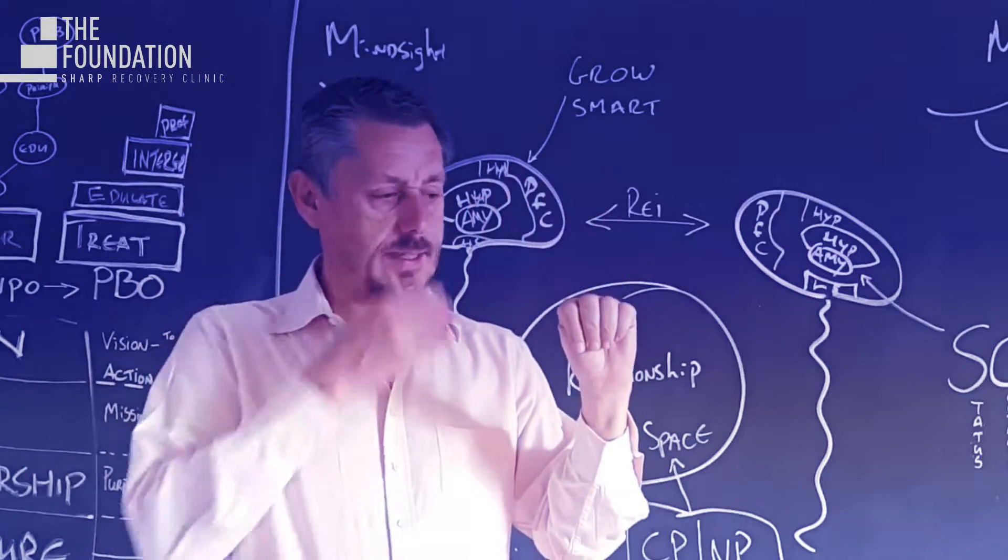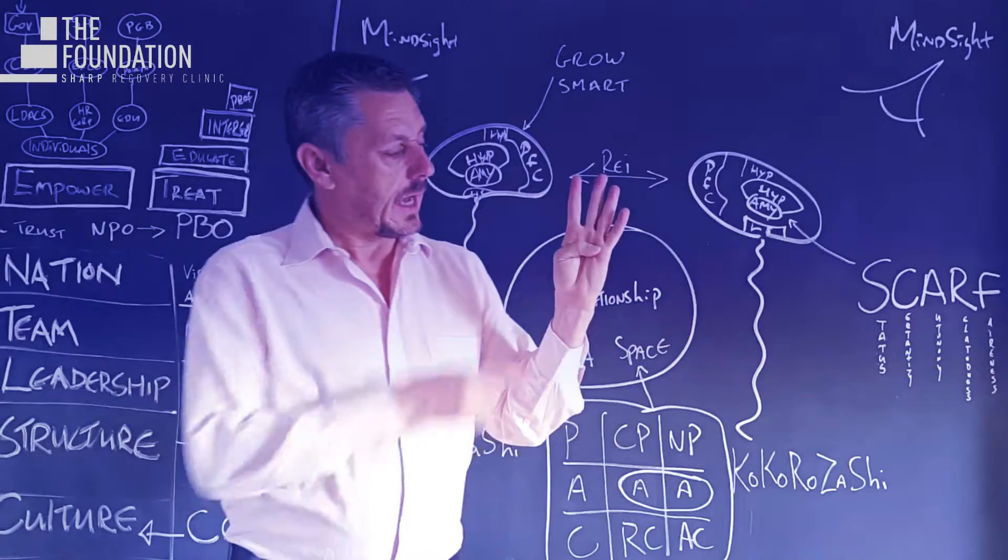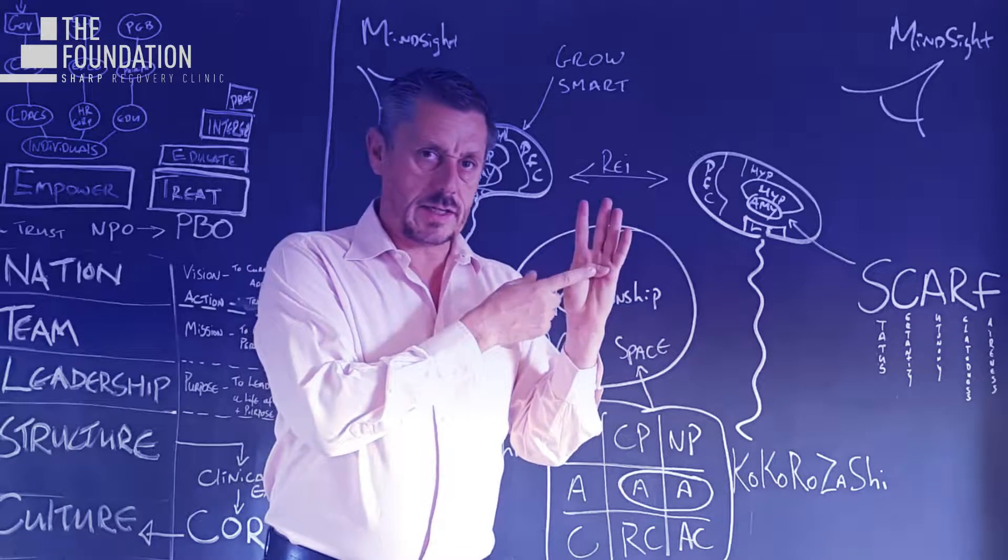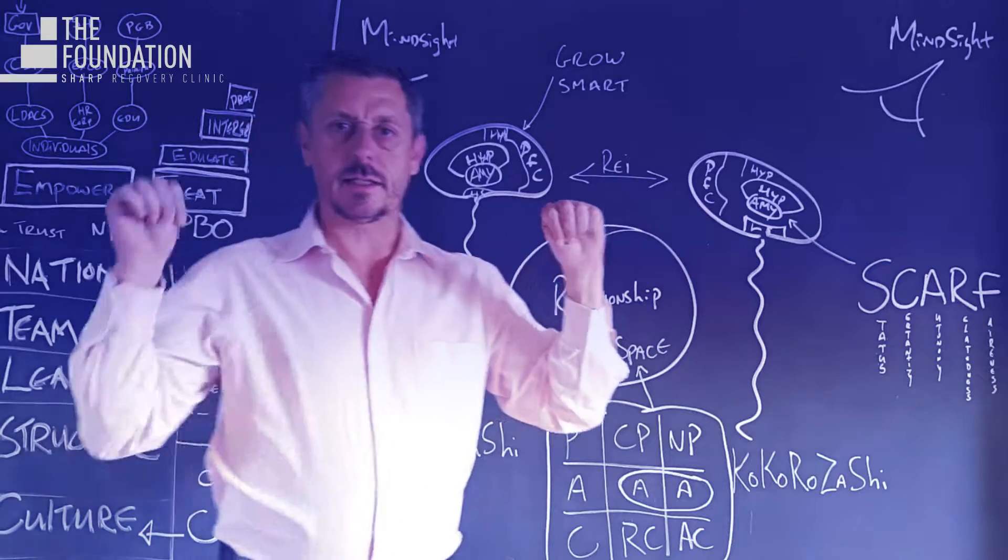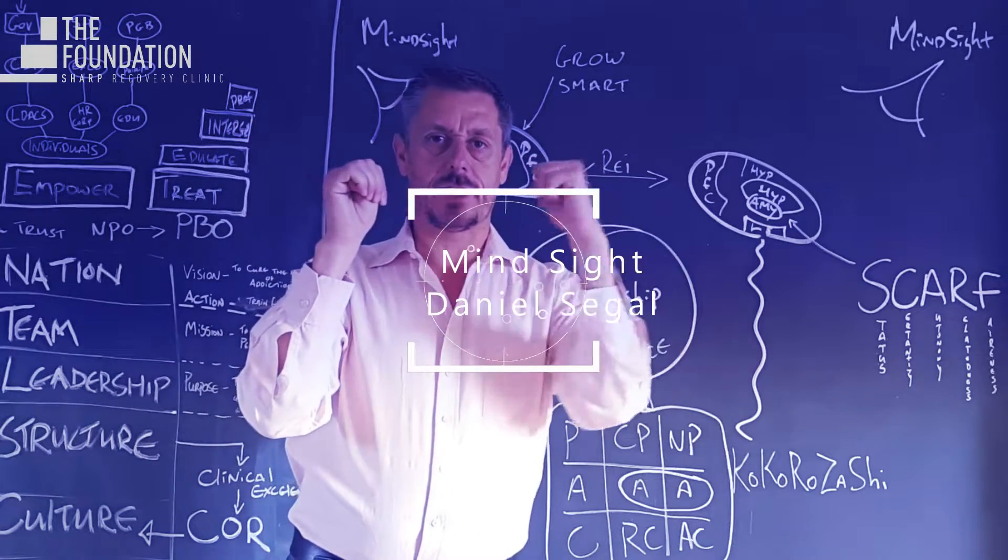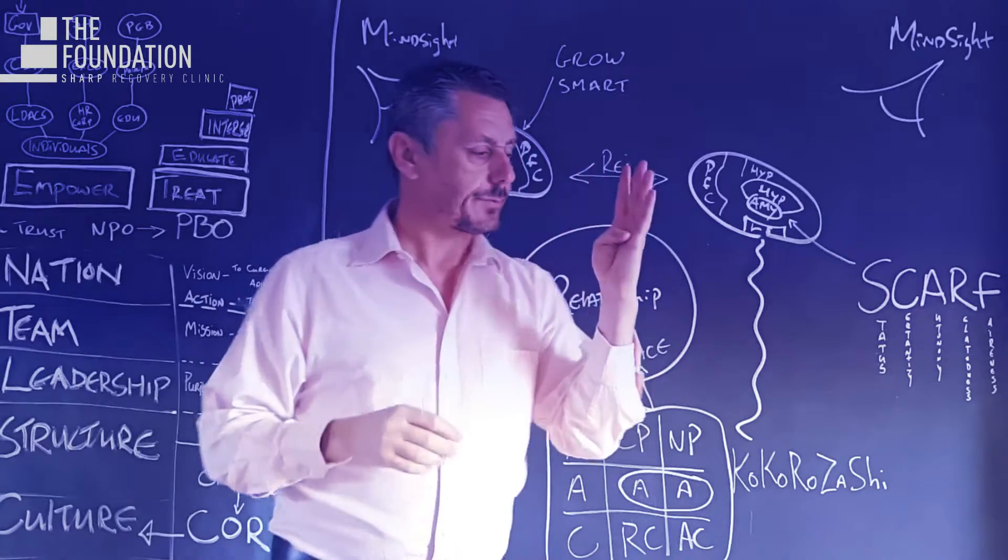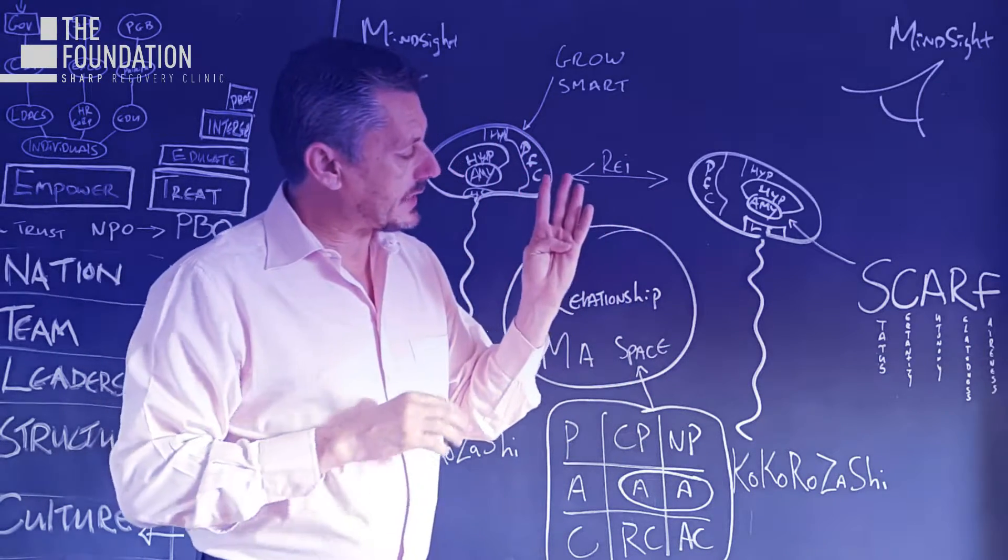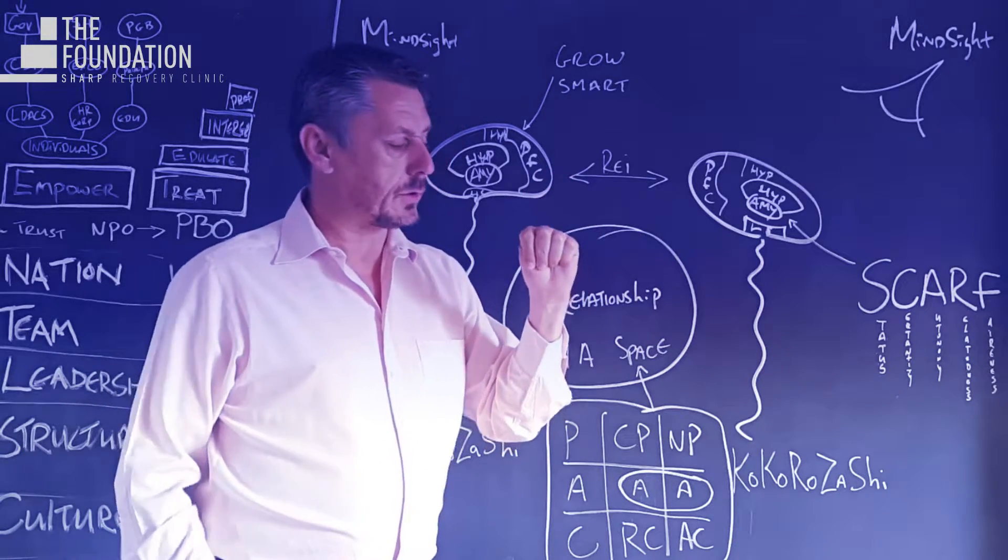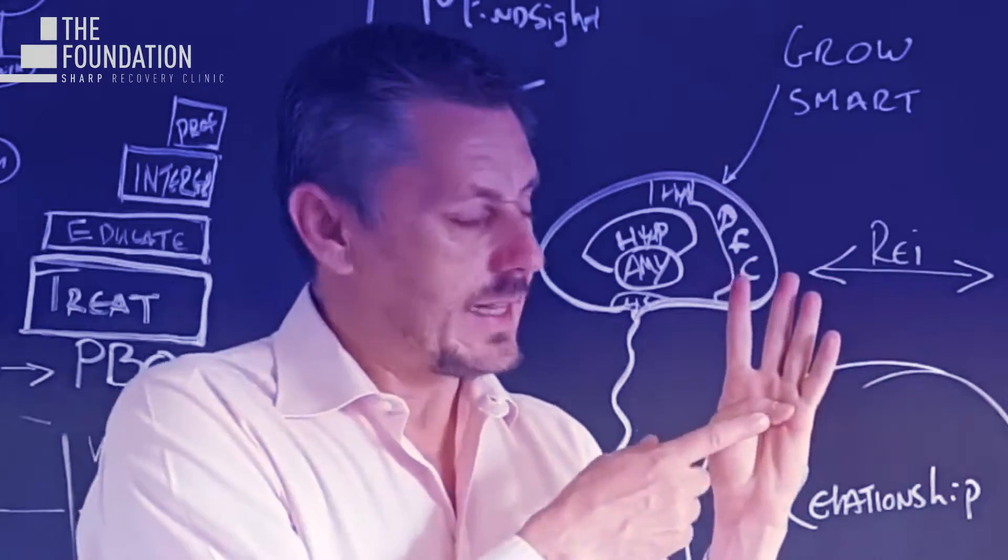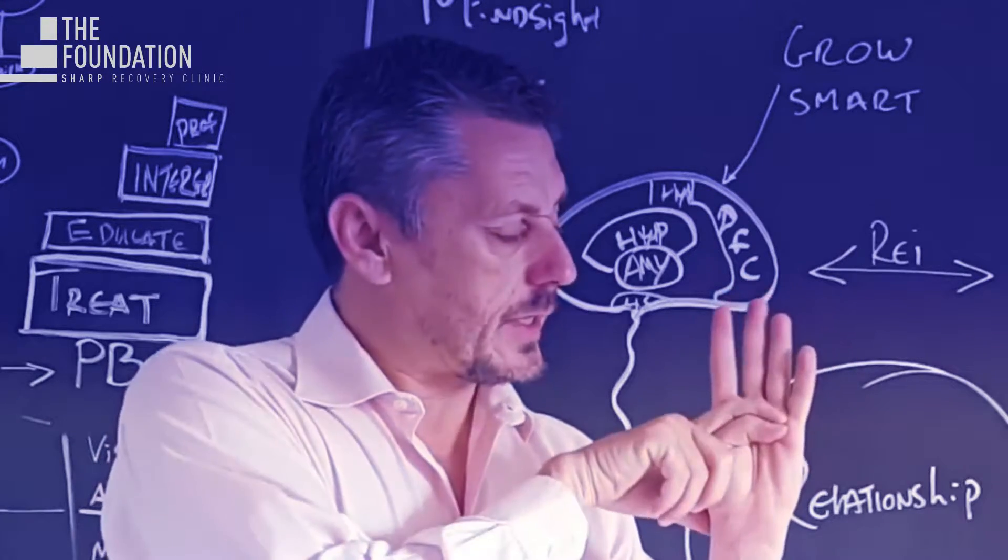They flip their lids and they stop thinking with their prefrontal cortex and they respond with the amygdala. So this is the amygdala and this is the prefrontal cortex. They're walking along in life and all of a sudden they're going to freak out. The person gets triggered and the way the brain is structured, there's a prefrontal cortex, the person flips their lid, there's amygdala response.